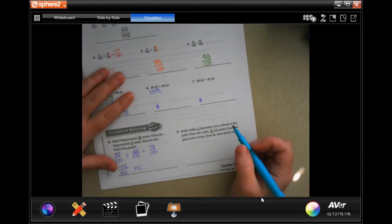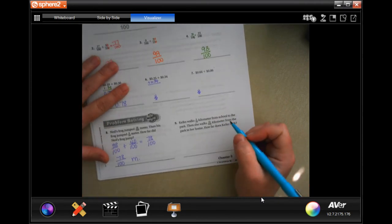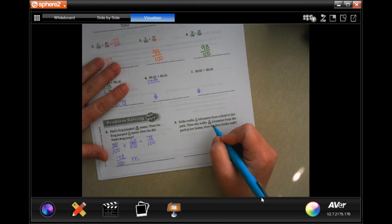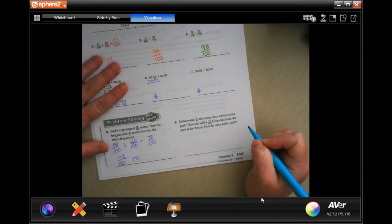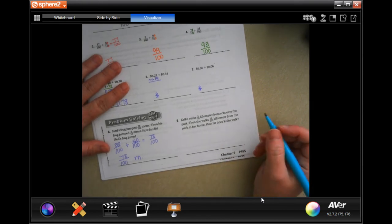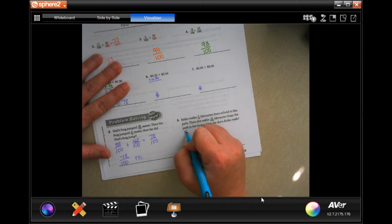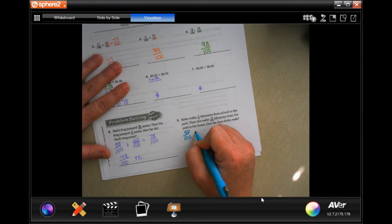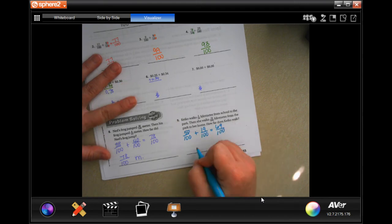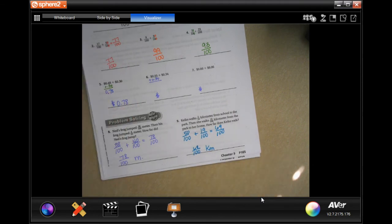Kiko walks 5 tenths of a kilometer from school to the park. She went 19 hundredths of a kilometer from the park to her home. How far does Kiko walk? Well, so we have 5 tenths that we're going to turn into 50 hundredths plus 19 hundredths. Well, that's 69 hundredths. So, 69 hundredths kilometers.